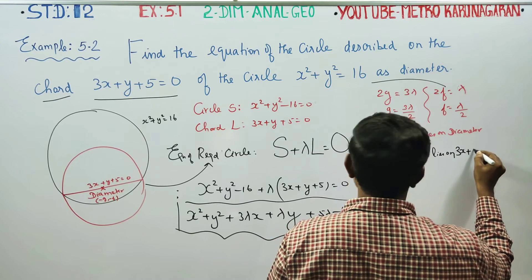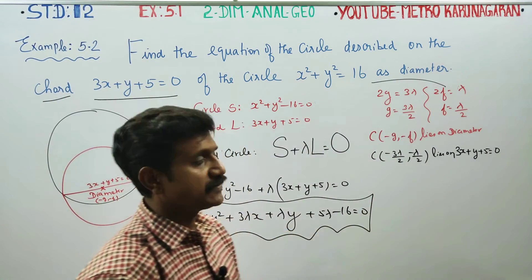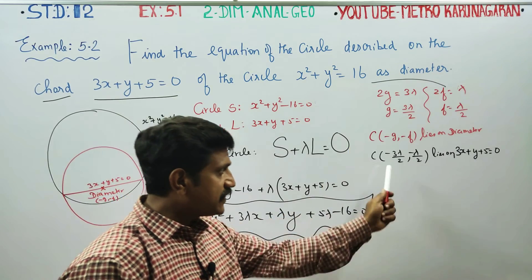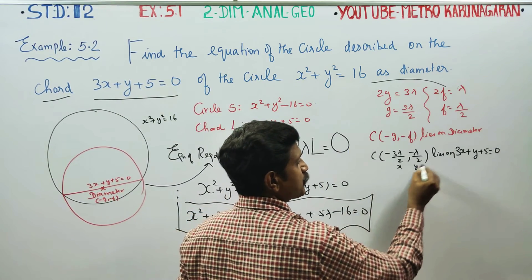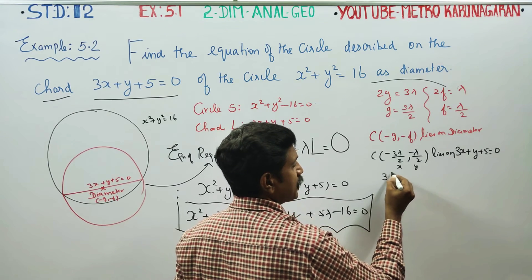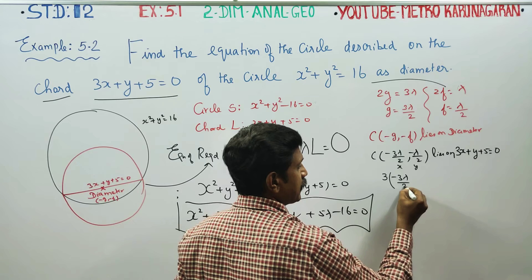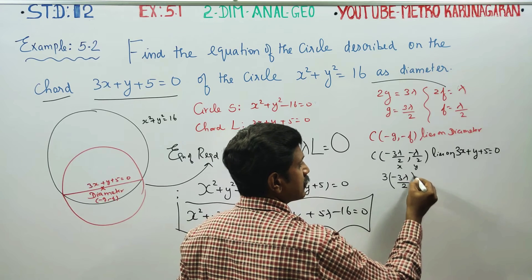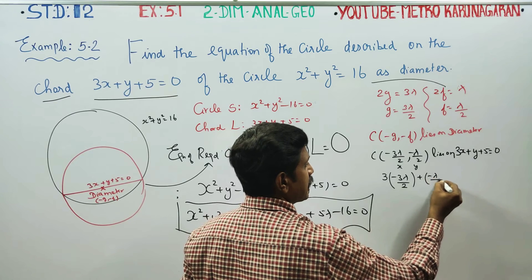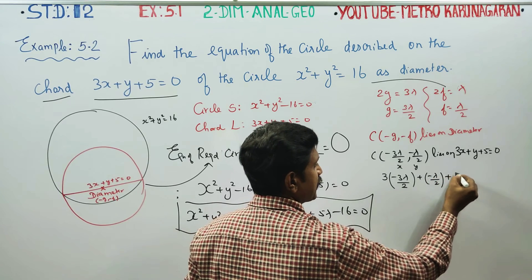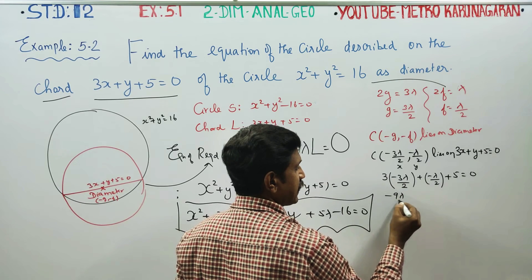3x + y + 5 = 0 is my diameter equation. We substitute the center coordinates into this diameter equation to find the value of lambda.